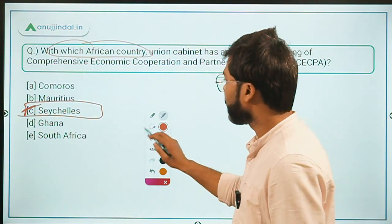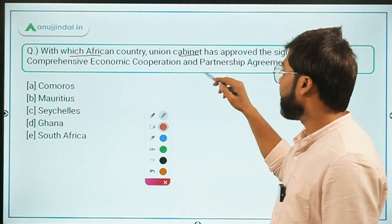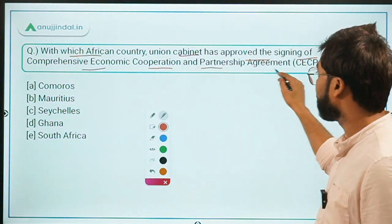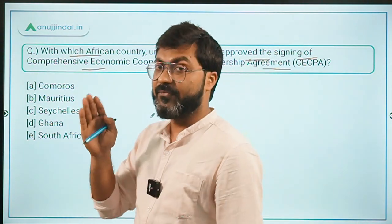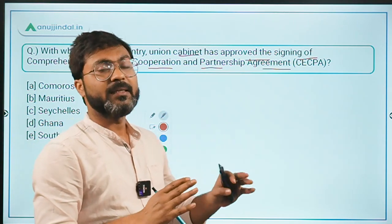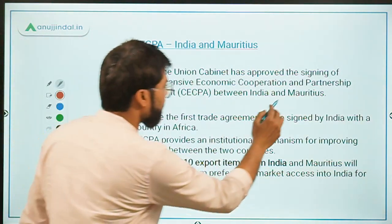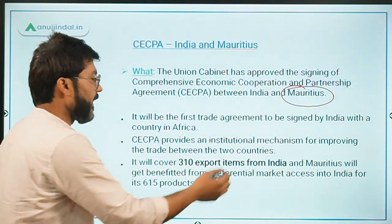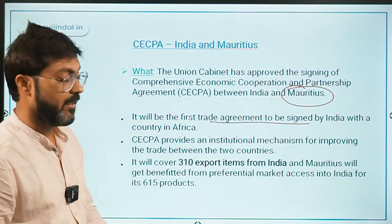Moving to question two: with which African country has the Union Cabinet approved the signing of a Comprehensive Economic Cooperation and Partnership Agreement (CECPA)? This is very important because it is the first African country with which such an agreement has been approved. The answer is Mauritius.